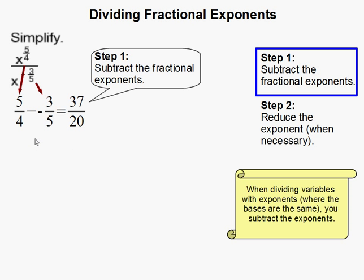So you simply subtract 5 fourths minus negative 3 fifths, and that gives us 37 twentieths.